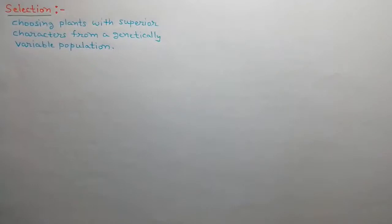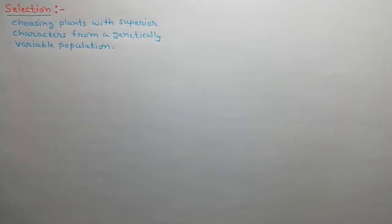First of all, we will discuss about the selection. Different genotypes reproduce differently in a population. As a result, a genetically variable population develops. We select the plants with superior characters from this genetically variable population and collect their seeds for growing the next generation. This process is called selection.